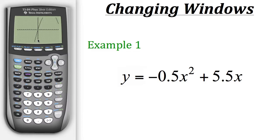Right now we can see part of the parabola, but we can't see the vertex and we also can't see the other x-intercept on the right side. Let's focus on getting the correct window for this area.